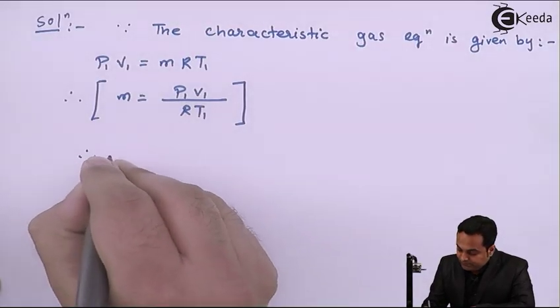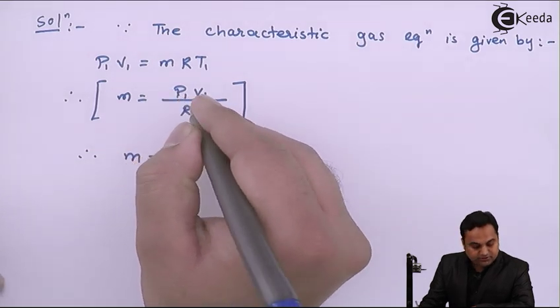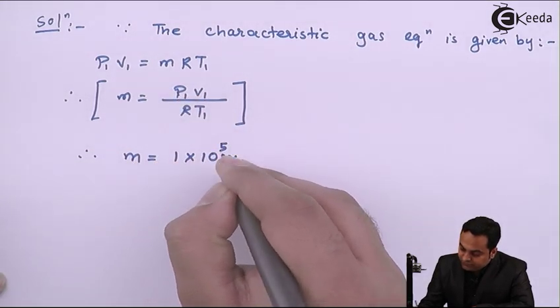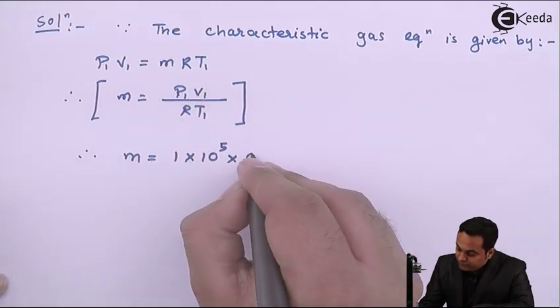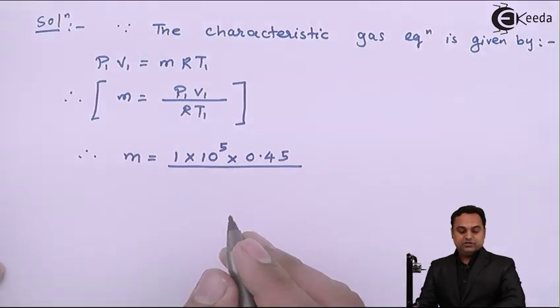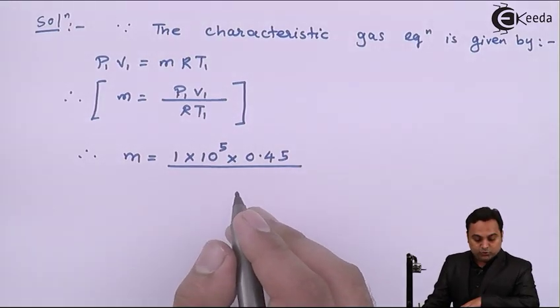Therefore mass will be, the value of P1 is 1×10^5 Newton per meter square, volume V1 is 0.45 meter cube, R value standard value we can assume